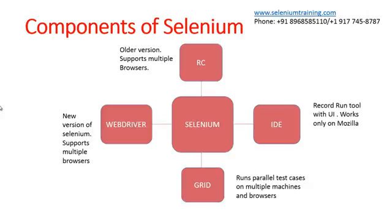The first component is IDE. IDE comes as an add-on in Firefox — it only works on Mozilla Firefox. IDE is primarily a record-and-run tool, and this recording and running functionality is present in every automation tool. The drawback of IDE is that it works only on Mozilla Firefox. Although you can do a lot with IDE — you can parameterize your tests — there are some limitations, the major one being that it only works on Mozilla.